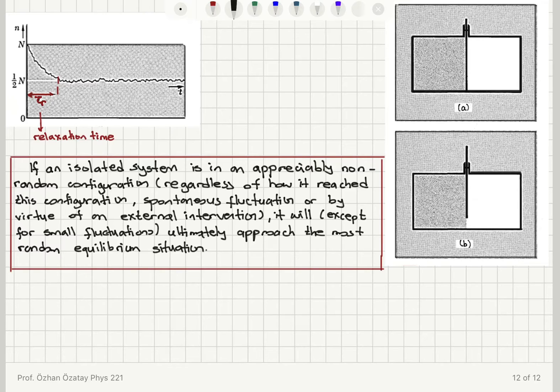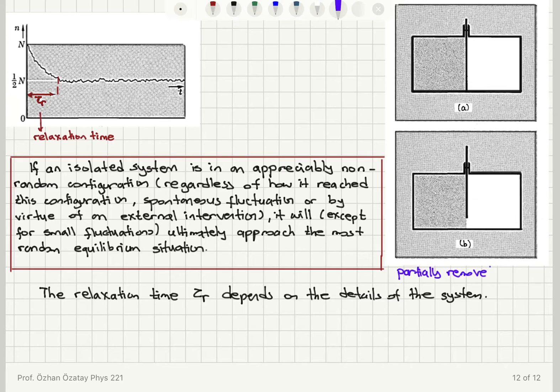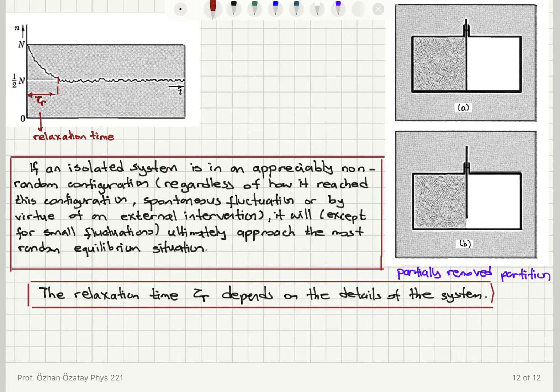The time it takes for the system to approach this equilibrium configuration, the relaxation time—here I showed this with tau r—depends on the details of the system. As you have seen here, if you have a partially removed partition, it takes longer compared to the scenario where I have full removal of the partition.